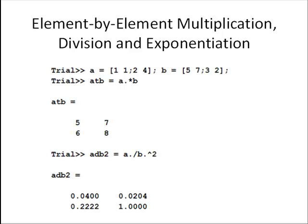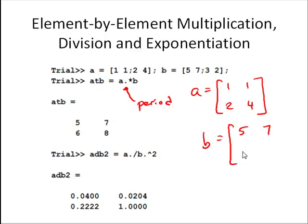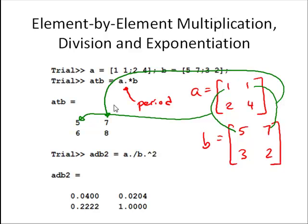For element-by-element multiplication, division, and exponentiation, we need to have that period to do element-by-element. Here we have two matrices defined as A equals 1, 1, 2, 4, and B equals 5, 7, 3, 2. We want to multiply each element of A by the corresponding element of B. So we have 1 times 5 goes there, and 1 times 7 goes there.